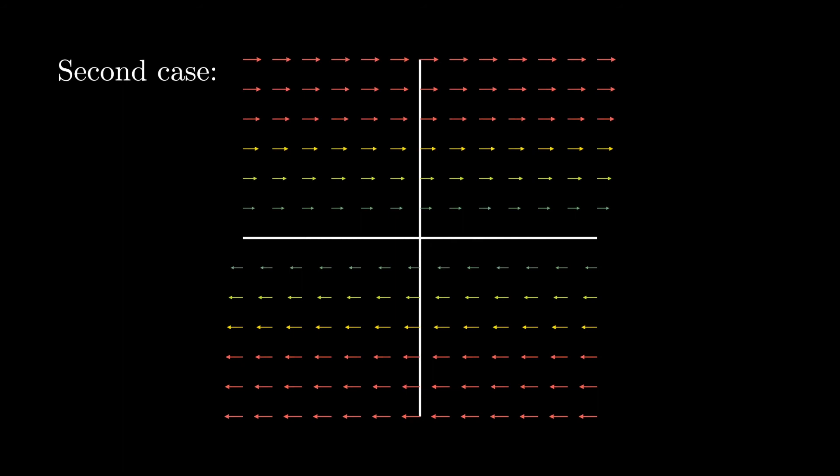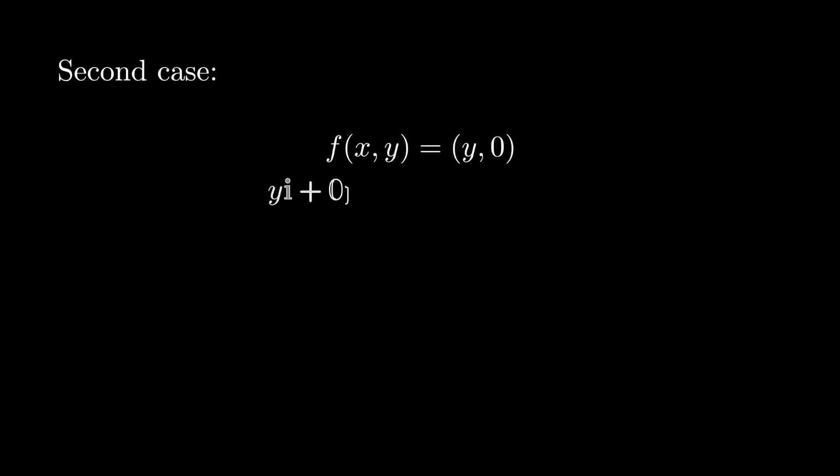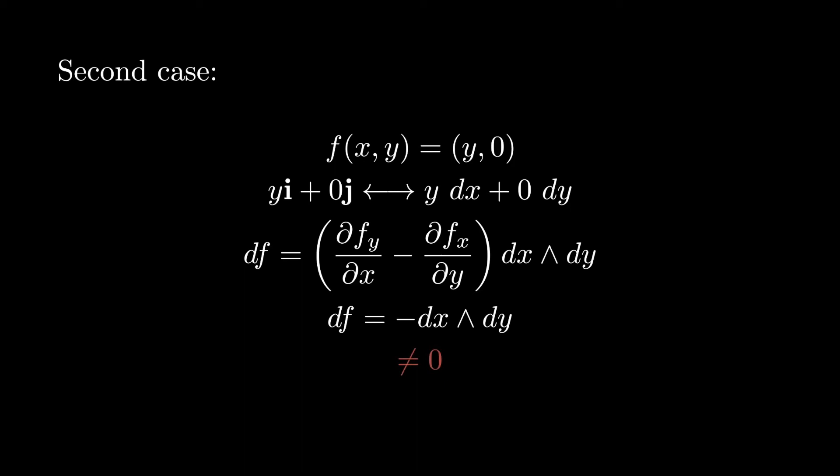Okay, time for the second case. Even just by inspection, it is clear that there is non-vanishing curl in this vector field, in particular along the x-axis. To make this concrete, let's consider the associated one form of this space. And then calculate the exterior derivative. As we can see, it is non-zero. So this is not a closed form.